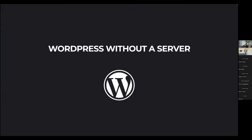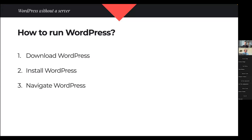Now let's look at how WordPress works without a server. To run WordPress, I normally need to download it, install it, and navigate through it. Downloading is a solved problem — we have WordPress.org and a download button. Inside the browser tab, in a JavaScript application in WordPress Playground, the exact same thing happens using the browser's Fetch API.